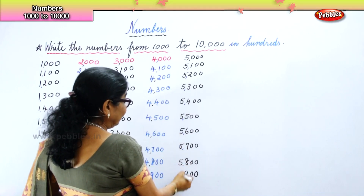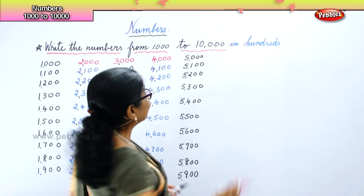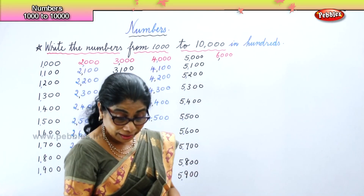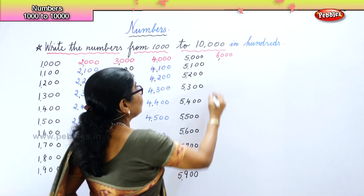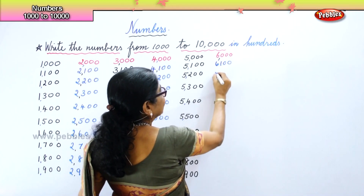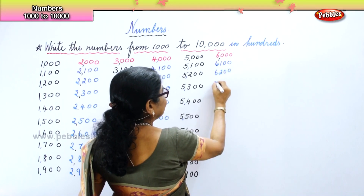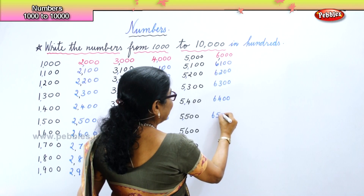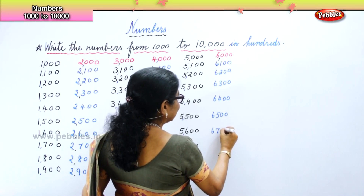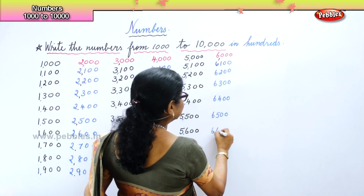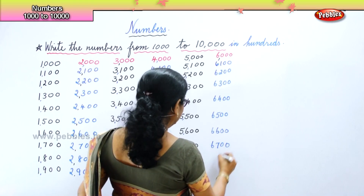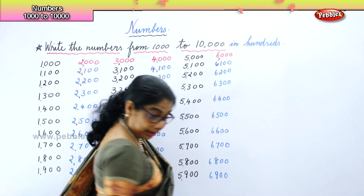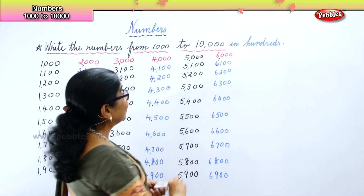After that you get six thousand — very good. So next we get six thousand. Let's write down six thousand. Next is six thousand one hundred, six thousand two hundred, six thousand three hundred, six thousand four hundred, six thousand five hundred, six thousand six hundred, six thousand seven hundred, six thousand eight hundred, and six thousand nine hundred.